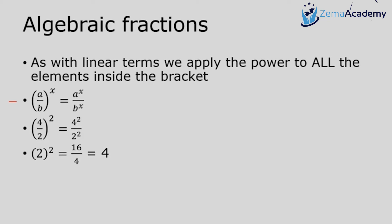For example, 4 over 2 in brackets, squared on the outside, equals 4 squared over 2 squared. To verify: 4 over 2 is 2, and 2 squared is 4. On the right, 4 squared is 16 divided by 2 squared which is 4, giving 16 over 4 equals 4. Both sides give the same result, confirming the rule.